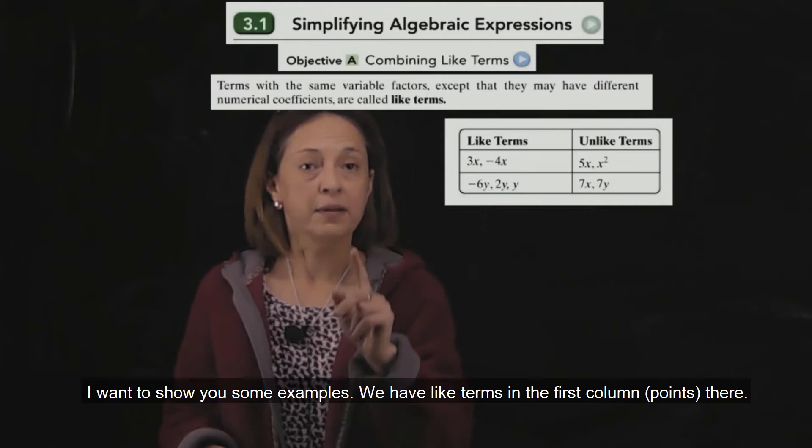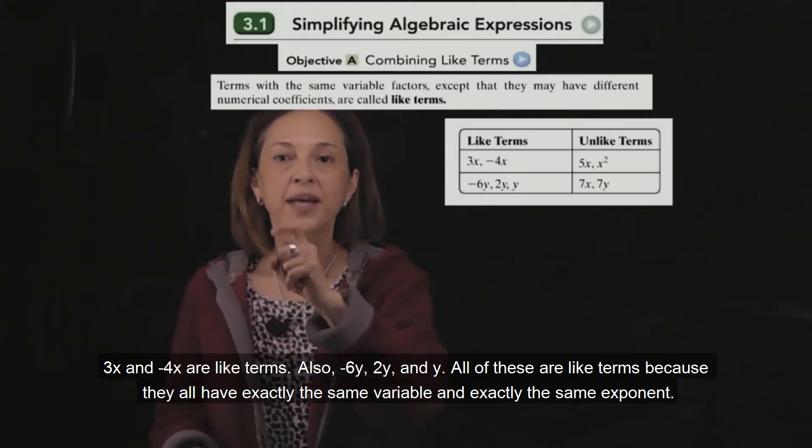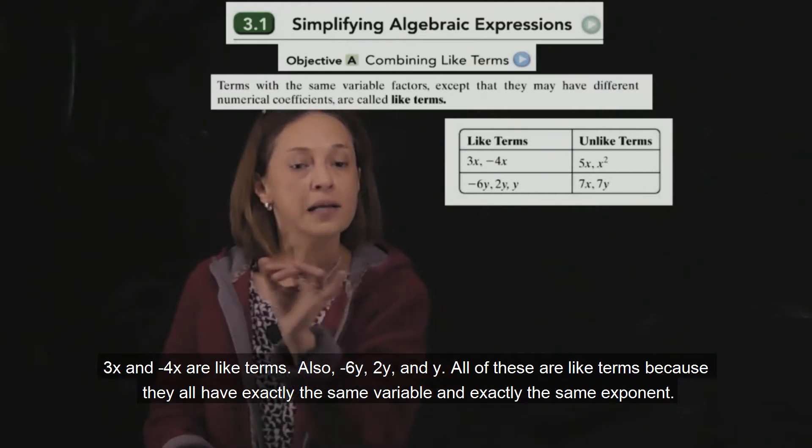Like terms, the first column there. 3x and negative 4x are like terms.